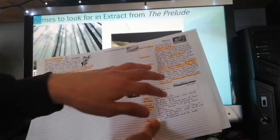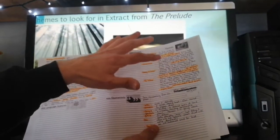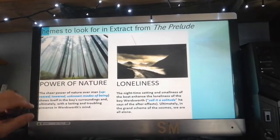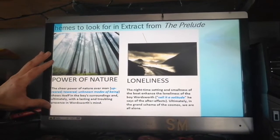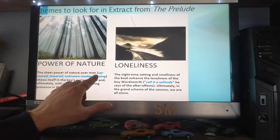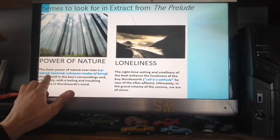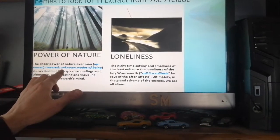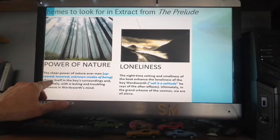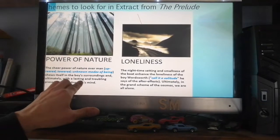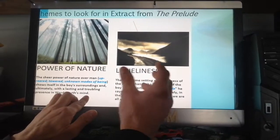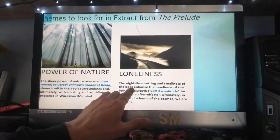Some of the themes — make sure you write these down. The first and most obvious is the power of nature: the sheer power of nature over man. The peak in the poem 'up reared its head' and towered over him, leading Wordsworth to understand nature as having 'unknown modes of being.' The sheer power of nature shows itself in the boy's surroundings and ultimately in the lasting and troubling presence it leaves in Wordsworth's mind.